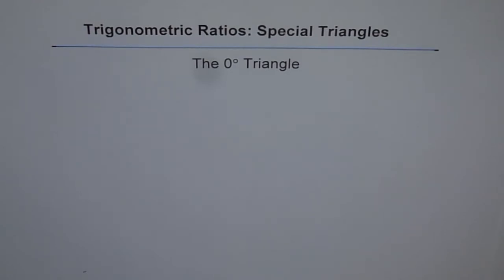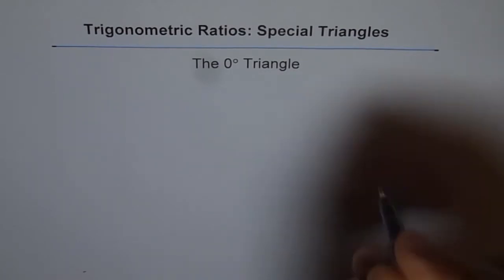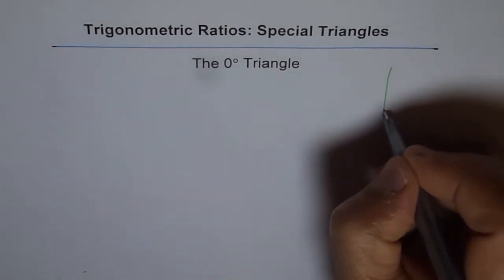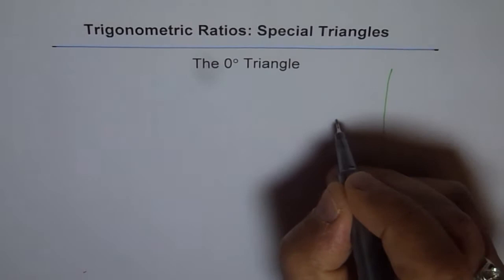Most of the time we are not talking about 0 and 90 degrees, but here 0 degrees and 90 degrees are very special. This video focuses on 0 degrees, followed by one on 90 degrees. Now let's understand what is 0 degrees in a right triangle. For that I'll make a coordinate plane to explain.